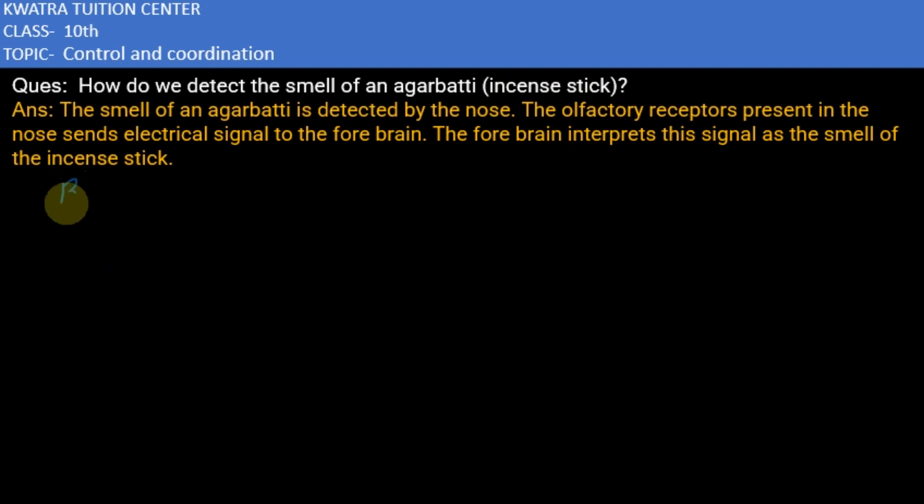We know that the brain is divided into three parts. First is forebrain, then midbrain, and then hindbrain. These three parts of our brain have particular functions.